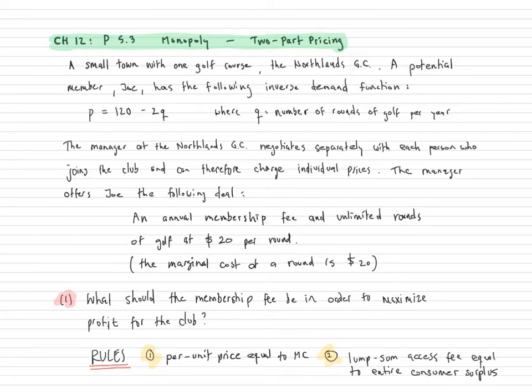So when you're thinking about two-part pricing, there are two rules you have to follow. One, you want to charge a per unit price that is equal to your marginal cost. And two, you want to charge a lump sum access fee equal to the entire consumer surplus.